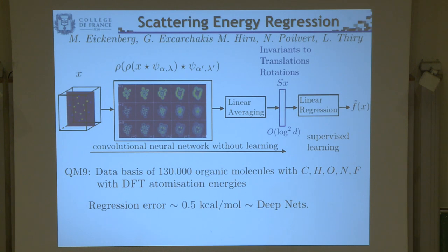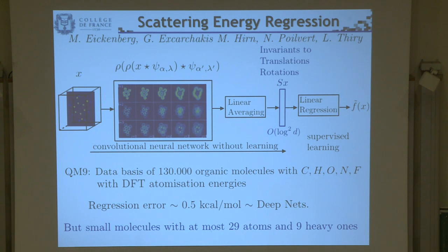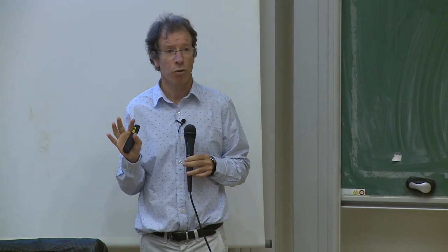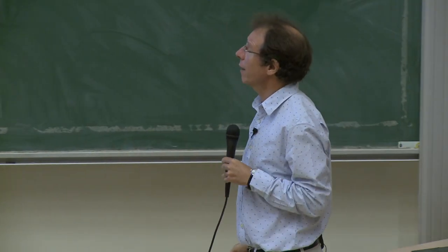Can such a structure perform as well as a deep network? The answer is yes on current chemistry databases. On databases of about 100,000 organic molecules composed of carbon, hydrogen, oxygen, nitrogen, and similar atoms, the error produced by this network — where nothing is learned besides the last layer — is of the order of 0.5 kilocalories per mole. This is about the same as deep nets compute, and comparable to DFT numerical calculations on the Schrödinger equation. But these are small molecules of about 30 atoms, and things change completely when problems get more complex.